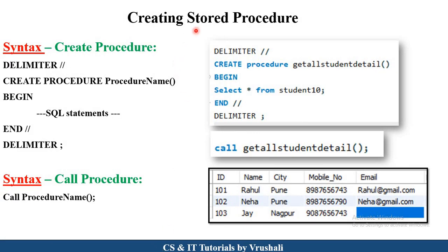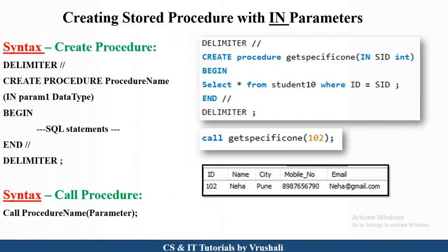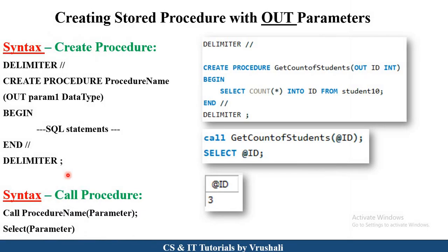Now we will learn how to create a stored procedure practically. As per the syntax: CREATE PROCEDURE, procedure name, BEGIN and END — and in between there is the actual logic and actual SQL statements. There is also the concept of a delimiter. The delimiter indicates the starting and ending point of a particular procedure. Every SQL statement ends with a semicolon, which creates confusion about where a procedure ends, so for that purpose we use the delimiter concept. You can create a stored procedure two ways: by using IN parameters and by using OUT parameters.